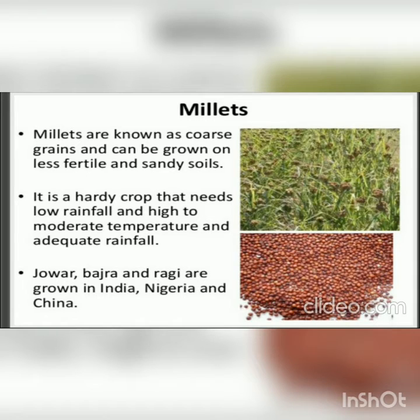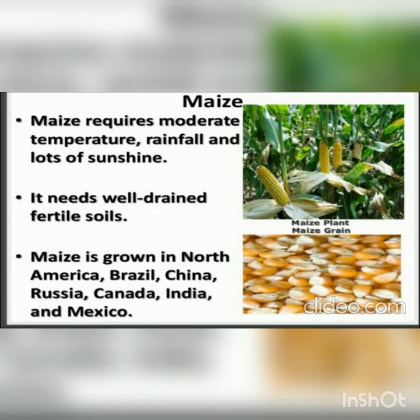Jowar, Bajra, and Ragi are grown in India, Nigeria, and China. Maize requires moderate temperature, rainfall, and lots of sunshine, and needs well-drained fertile soil.